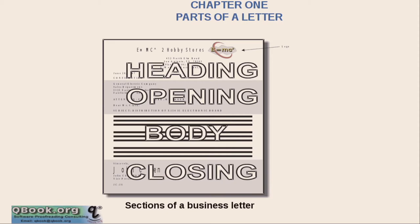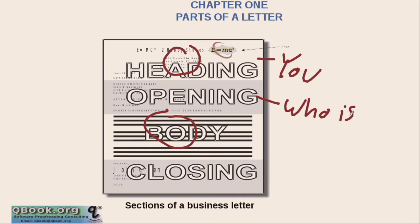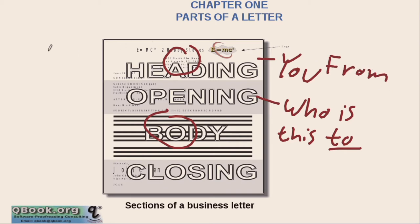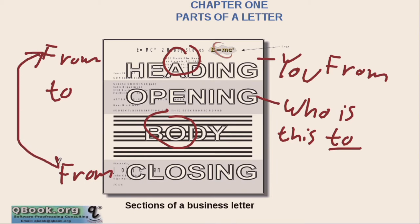The body is where you write the message of your letter — think of an email, which has mostly body. The heading is your information — who the letter is from. The opening is the receiver information — who it is going to. The closing is also from you, where you sign your name. So you begin the formal letter with 'from,' and you end the formal letter with who it's from, and in between you have the 'to' information and the body, which contains your main point.